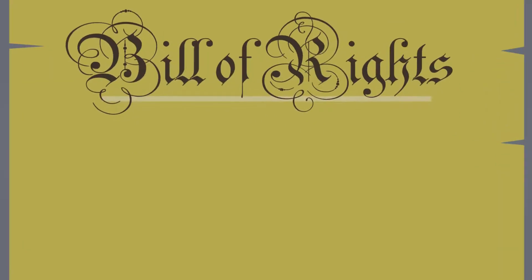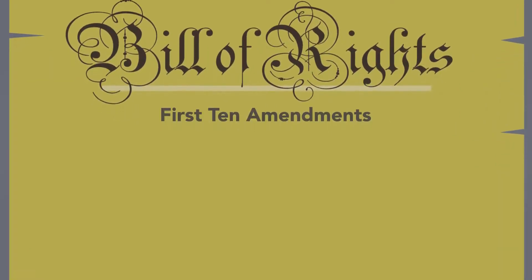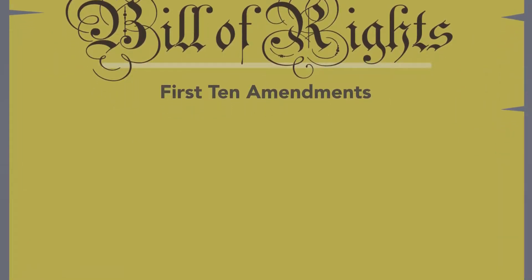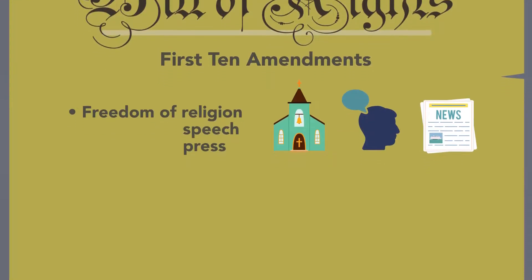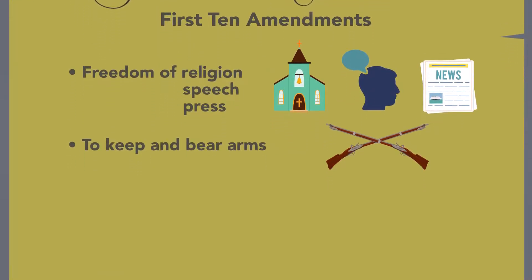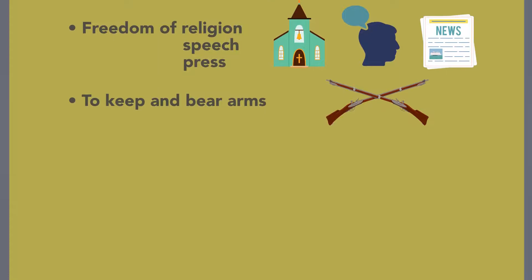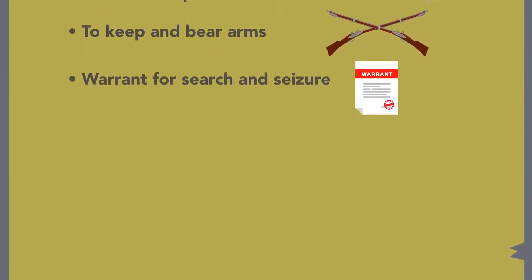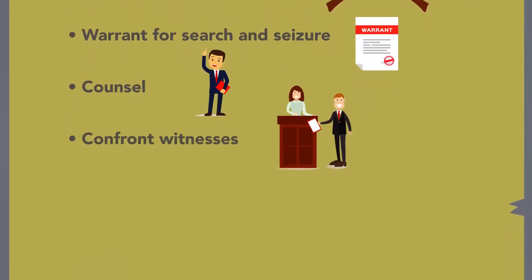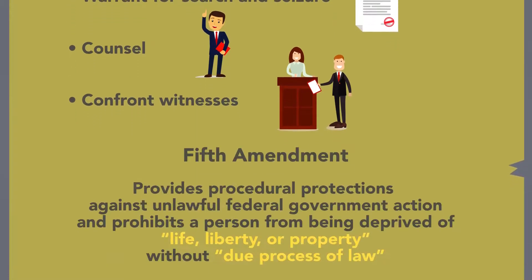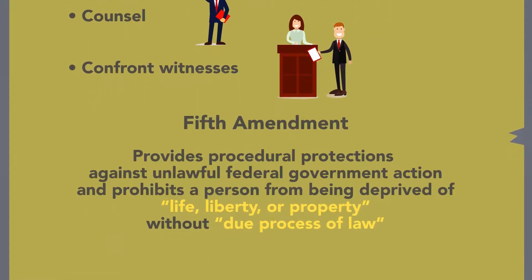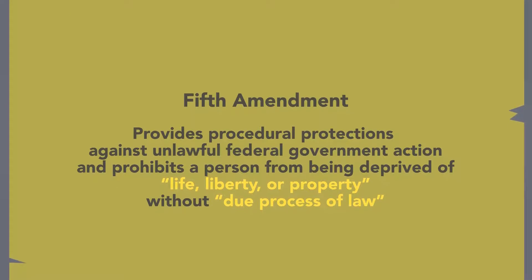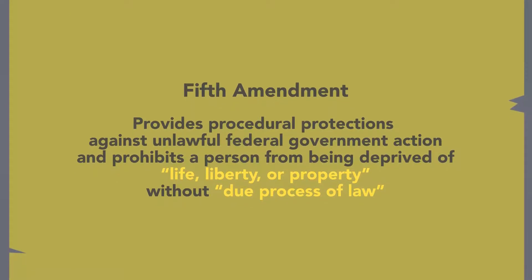The Bill of Rights — the Constitution's first ten amendments — guarantees civil liberties, including freedom of religion, speech, and press, the right to keep and bear arms, and procedural protections in criminal cases, such as the warrant requirement for searches and seizures, the right to counsel, and the right to confront witnesses. The Fifth Amendment also provides procedural protections against unlawful federal government action and prohibits a person from being deprived of life, liberty, or property without due process of law.